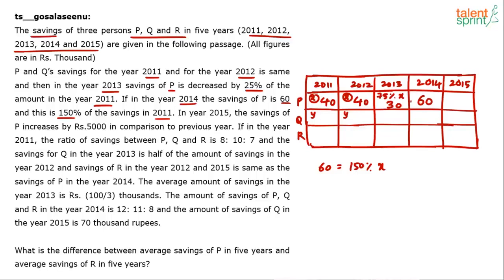In 2015, P's savings increase by 5000 compared to the previous year. Since P's 2014 savings are 60, P's 2015 savings will be 65. Remember all values are in thousands. So we now have all five values for P: 40, 40, 30, 60, 65.